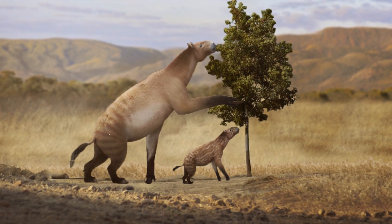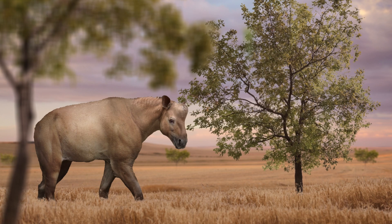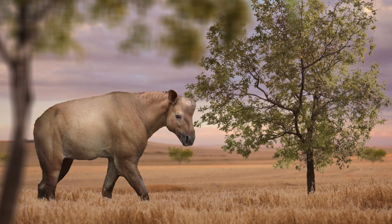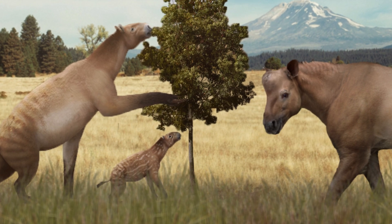This creature is an extinct relative of horses and rhinos known as Chalicothere. And this creature is also a Chalicothere. Even though they look pretty different, both of these animals lived at the same time and in the same places, and they did the same things.